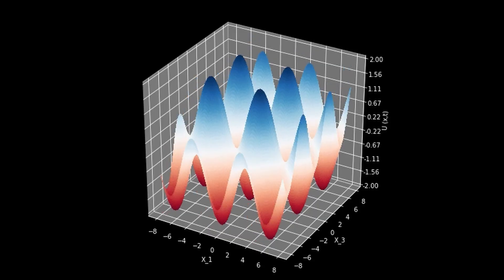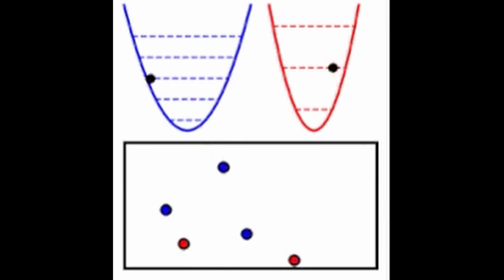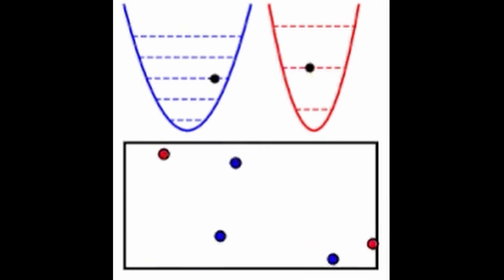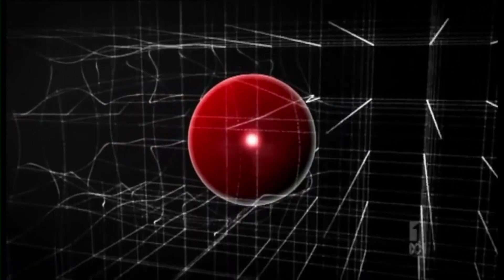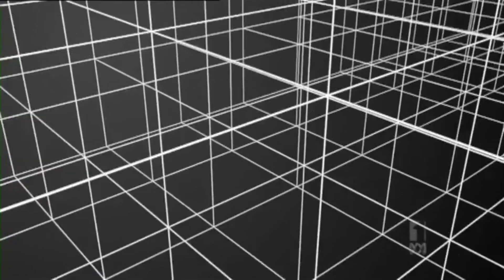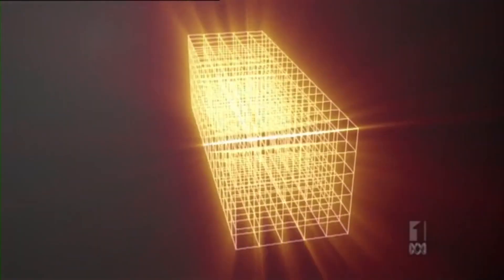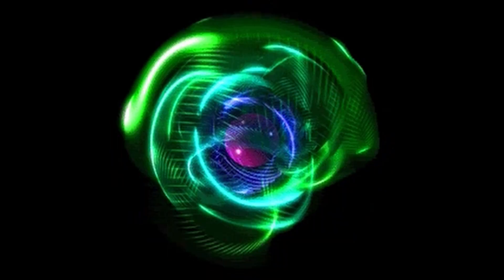One of the key features of Yang-Mills theory is the concept of mass. Mass is a property of particles that determines their behavior and interactions with other particles. In Yang-Mills theory, the mass of particles is related to the strength of their interactions with the fields that describe them. The existence of mass in Yang-Mills theory is related to a phenomenon known as the mass gap — the fact that the theory predicts the existence of particles with a certain mass that have never been observed experimentally. The mass gap is related to the mass jump, which refers to the sudden increase in mass when the strength of interactions exceeds a certain threshold.